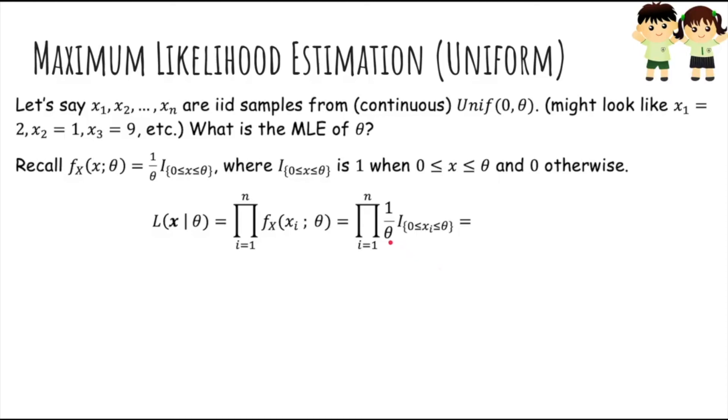And how do we simplify this? Well first of all we notice that in every term in the product there is this 1 over theta, so we multiply 1 over theta by itself n times, so we get 1 over theta to the n. And then how do we multiply the indicators? Well notice that the only way that the likelihood could be non-zero is if all the indicators are 1, because if even one of them was 0 then the whole likelihood would become 0. So the only way that all the indicators are not 0 is if all the xis are between 0 and theta.